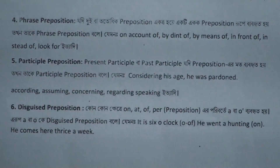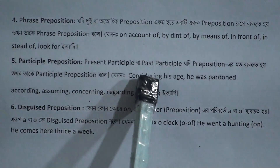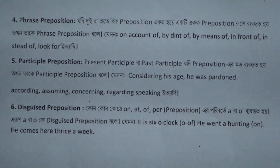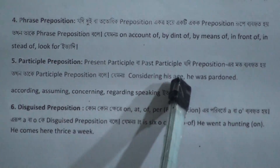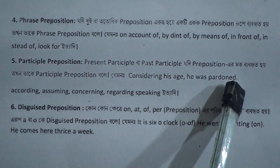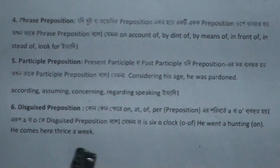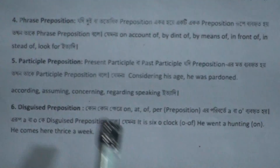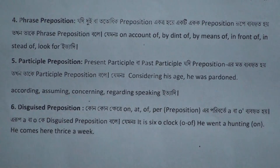Number five is participle preposition. When a present participle or past participle is used as a preposition, we call it a participle preposition. For example: considering his age, he was pardoned. Other examples include: according, assuming, concerning, regarding, respecting, and speaking.